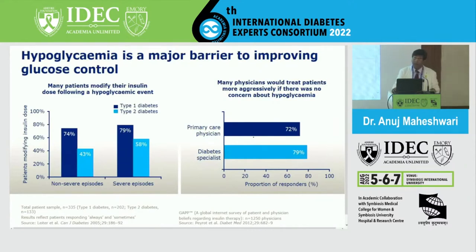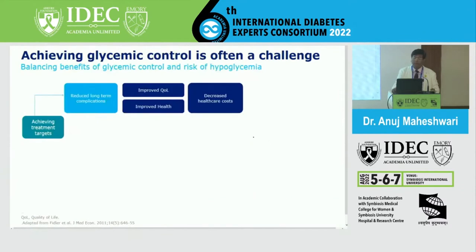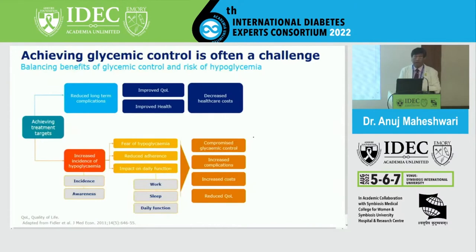Many physicians would treat patients more aggressively if there were no concern about hypoglycemia - admitted by 72% of primary care physicians and 79% of diabetes specialists. Achieving glycemic control is often a challenge. There is always a balance between glycemic control and risk of hypoglycemia, since we strive for good glycemic control to reduce complications, improve quality of life, and decrease healthcare costs - but if the patient experiences hypoglycemia, everything goes in vain.